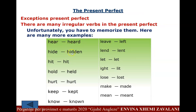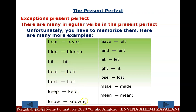There are many irregular verbs but they are very useful in English. Learning these will also help you with other verb tenses later on. Continuing: hear/heard, hide/hidden, hit/hit, hold/held, keep/kept, know/known, leave/left, lend/lent, let/let, light/lit, lose/lost, make/made, mean/meant.